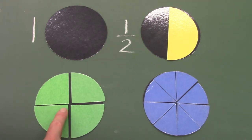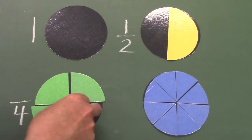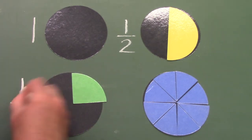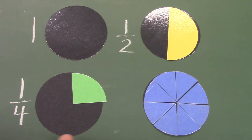How many pieces do we have here for this circle? That's right, there were four pieces to cover this circle. If we had one out of the four pieces, we would call this one-fourth.